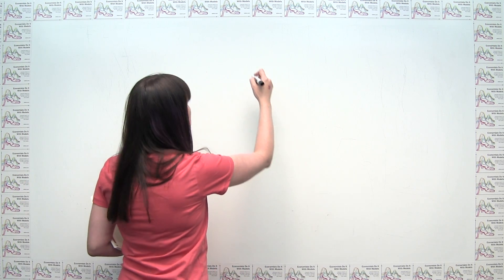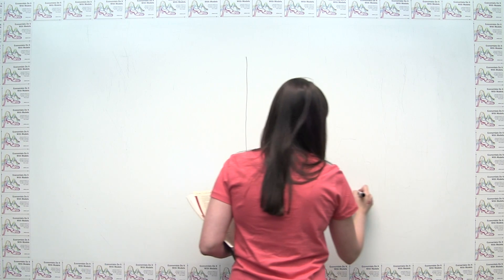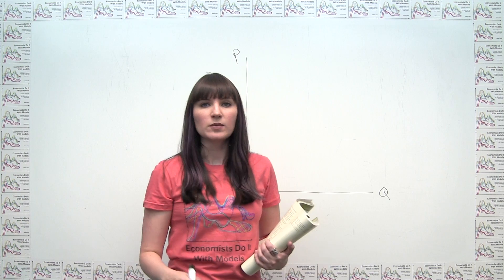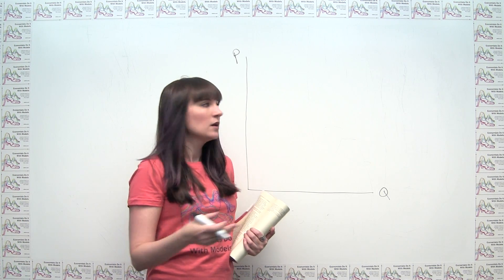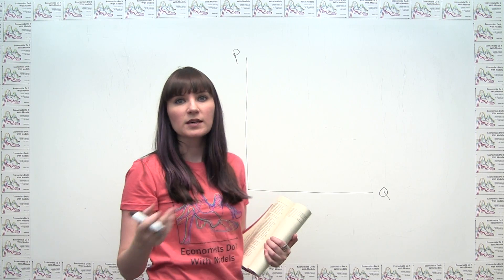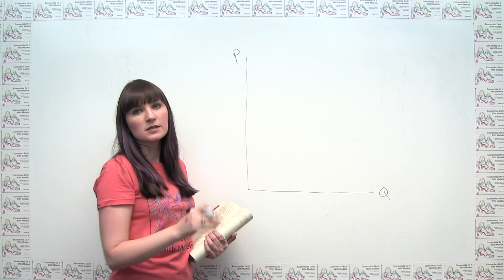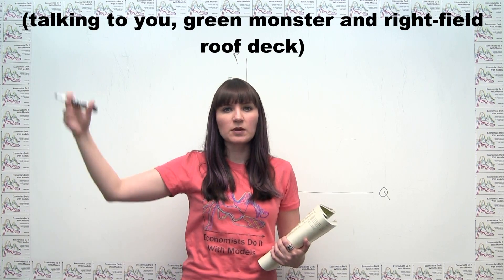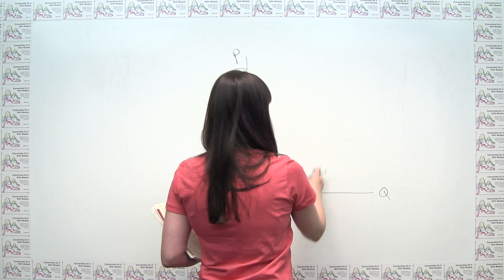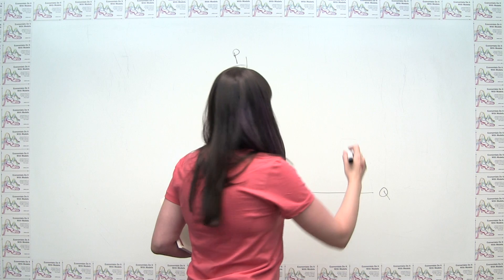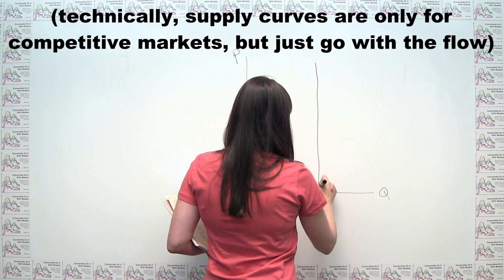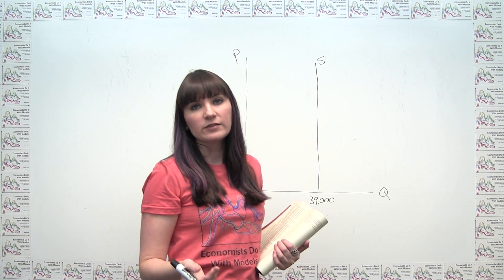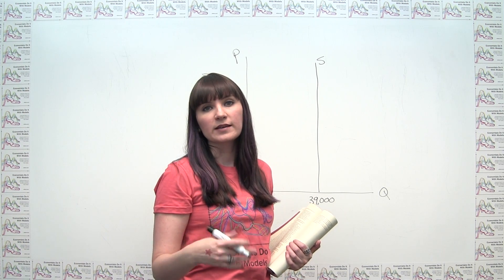If we were to draw a supply and demand diagram, we'd start just like we usually do — quantity on the horizontal axis, price on the vertical axis. But we don't draw a normal upward-sloping supply curve, because over the course of a season, a higher ticket price doesn't make more tickets actually appear. Maybe over a few seasons the park adds new seats, but within the short term, we have supply that is fixed and unresponsive to price. So the supply curve is vertical, fixed at 39,000. We do have a downward-sloping demand curve because lower prices make more people willing and able to go see the Red Sox.